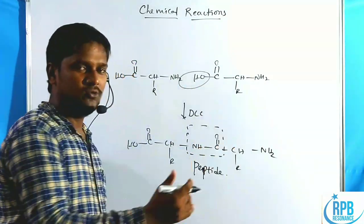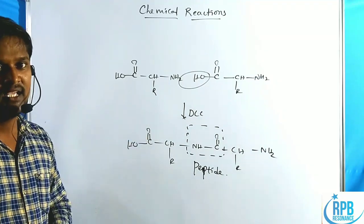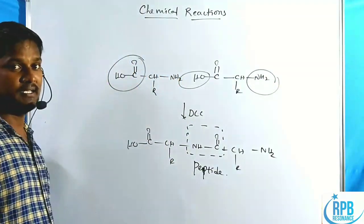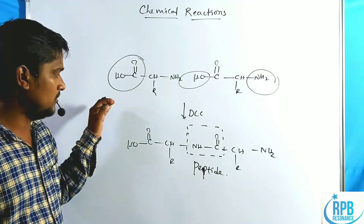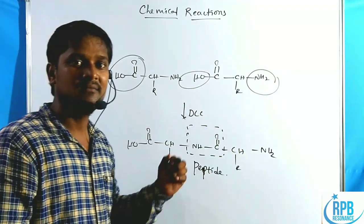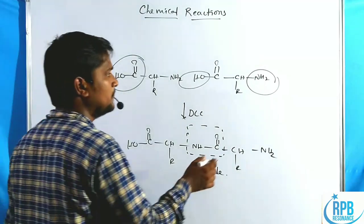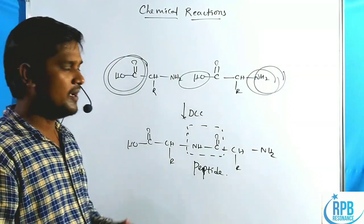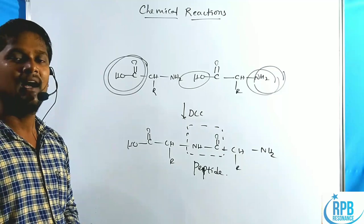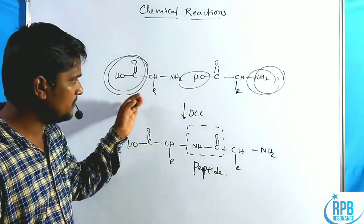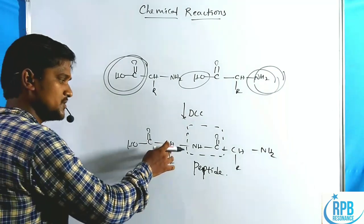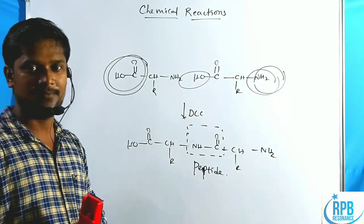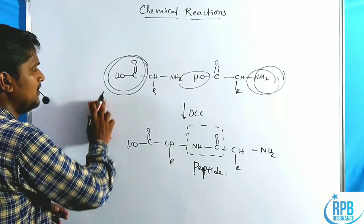Whenever two amino acids combine using a peptide linkage, the product still has acidic functionality and NH2 functionality, which can react with reagents to give undesired products. Due to this problem, we protect these two groups. After protection, we use DCC reagent to get the peptide linkage, and then deprotect those functional groups to get the desired product. This is the simplest peptide synthesis.